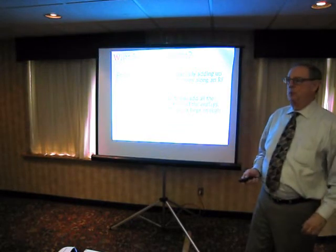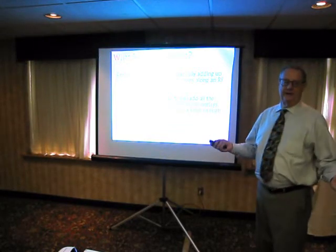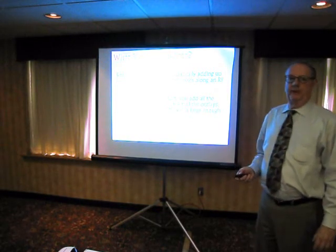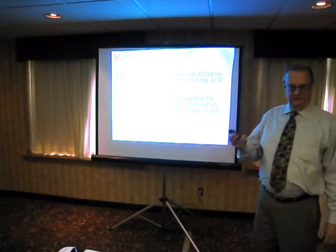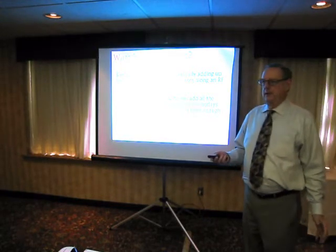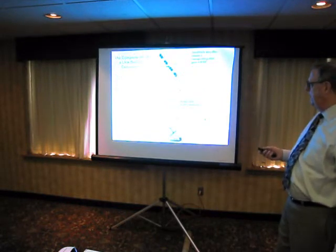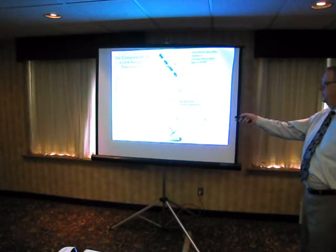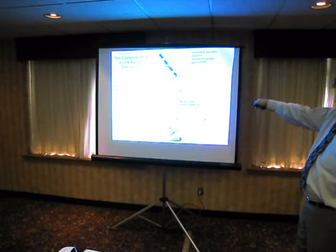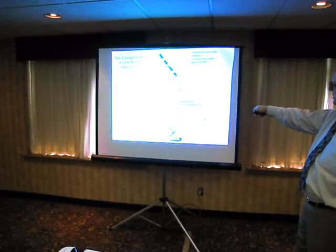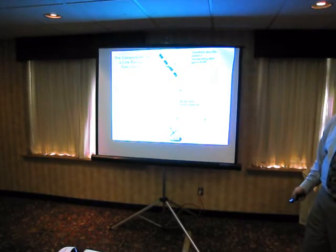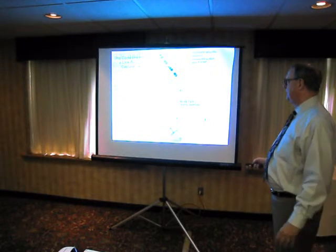We ask what is a link budget and realize that it is very analogous to a household budget. You add up all the good things, you subtract all the bad things, and see if you've got enough left over to do the job. Things that go into it include the atmosphere, the earth station's power, the sensitivity, the satellite's power, space loss, and noise. The way to put these all together, expressed in decibels, is to just add and subtract properly.